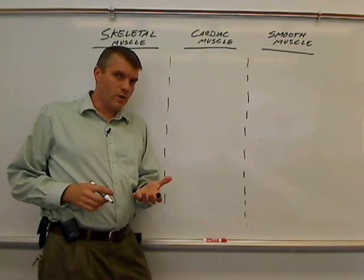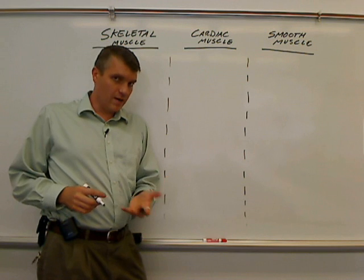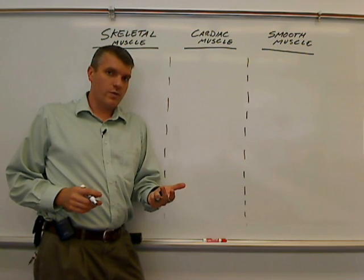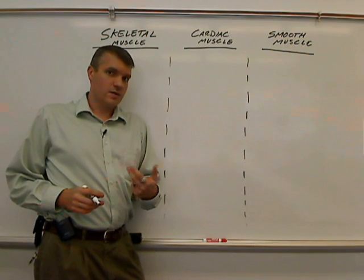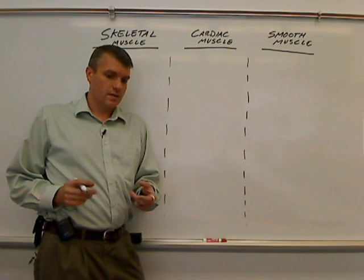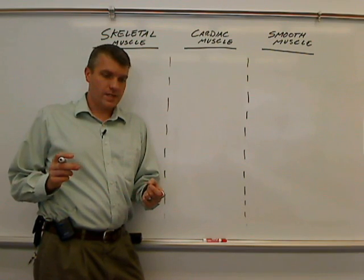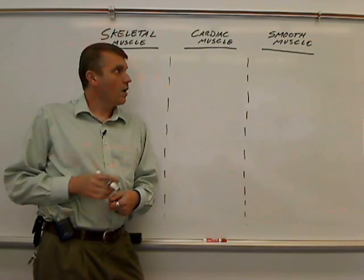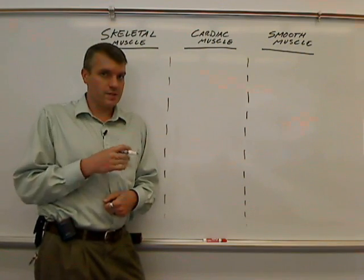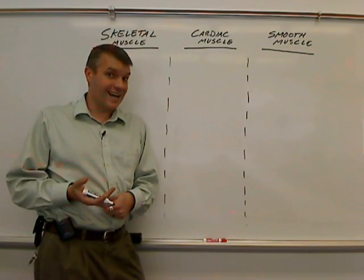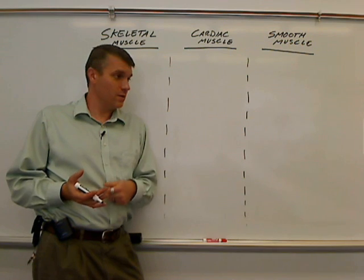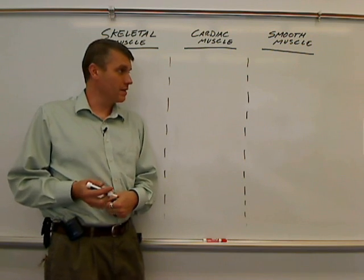Some of the bare-bones similarities we could talk about are the characteristics of muscle tissue we already covered: contractility, extensibility, elasticity — all of those. All three types have all those in common. So if you can't think of anything else when it comes to test time, you can put those down.